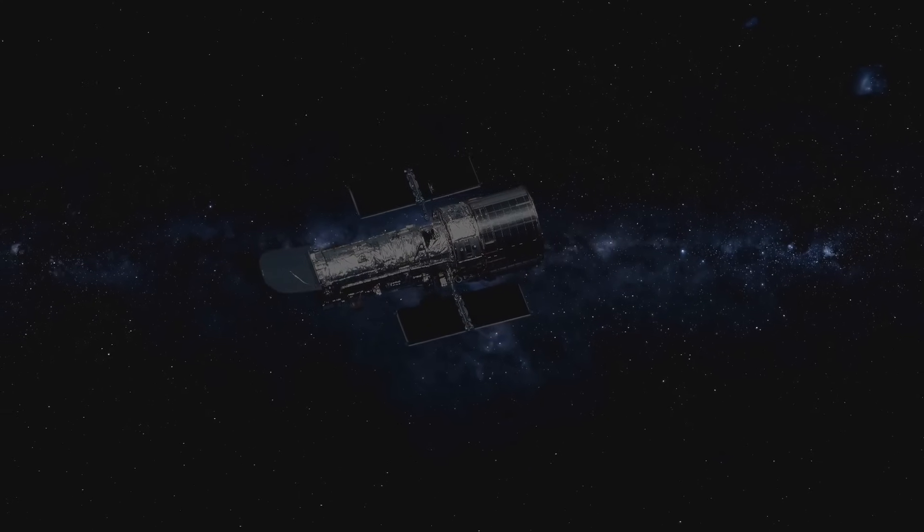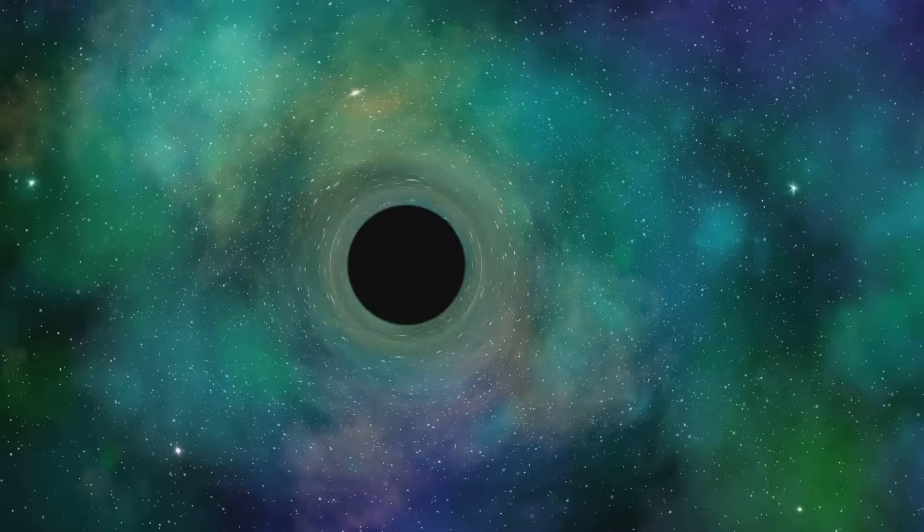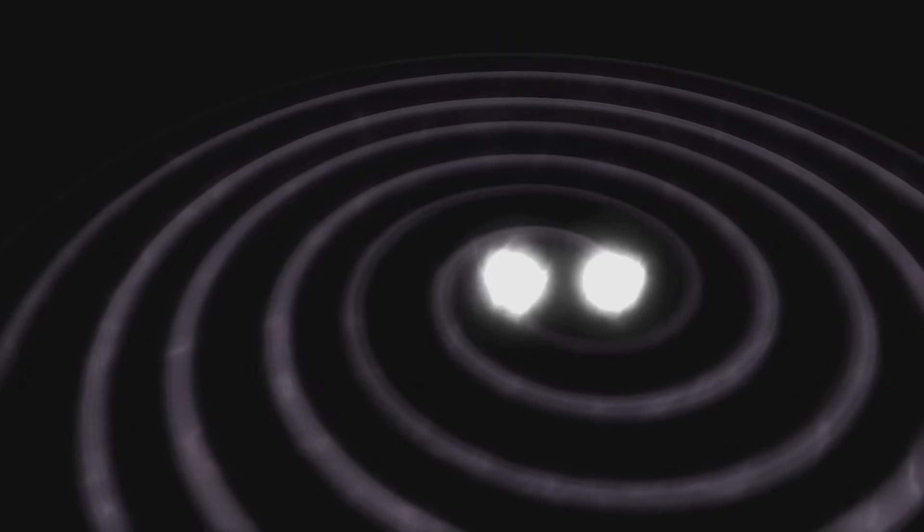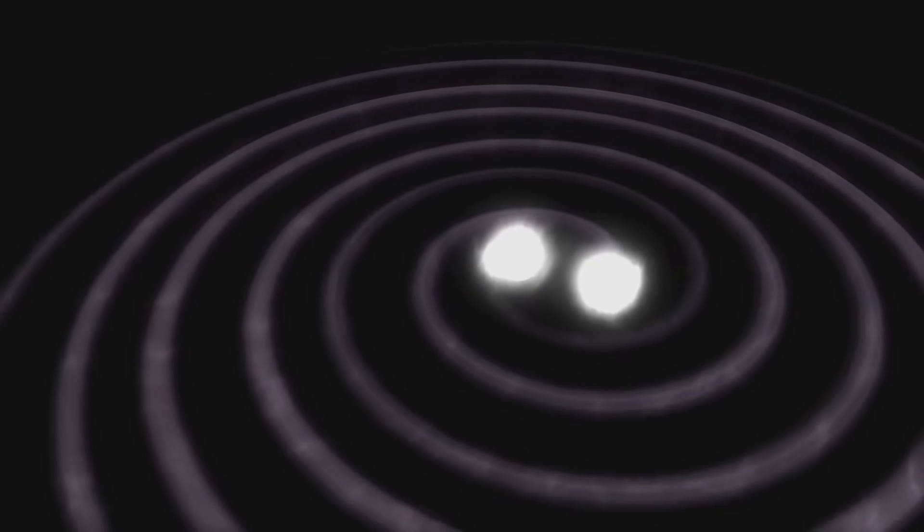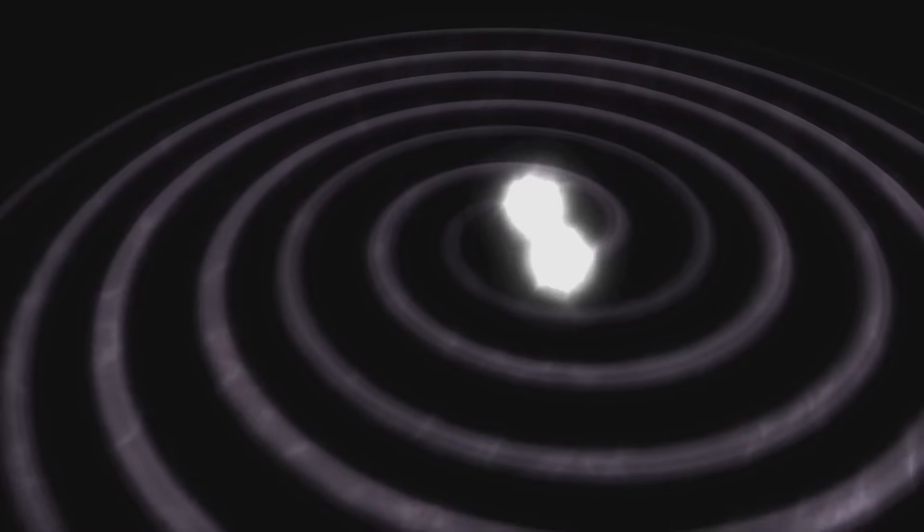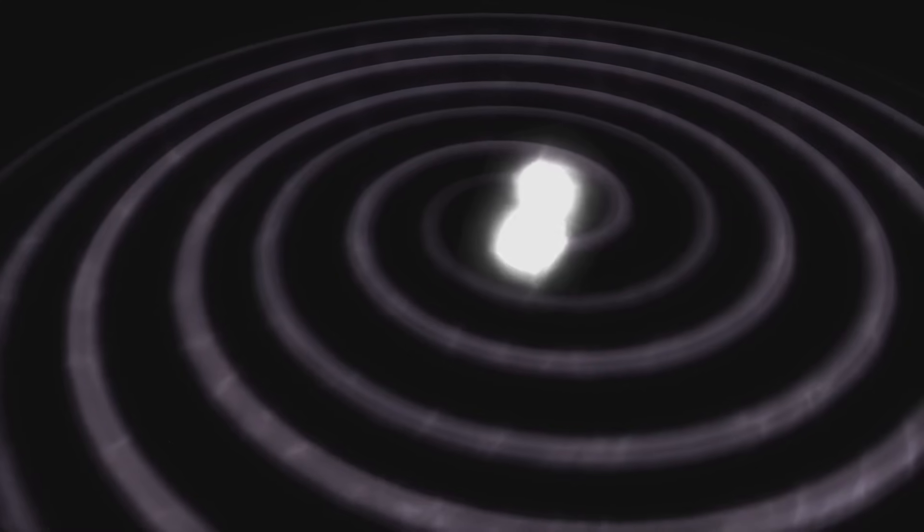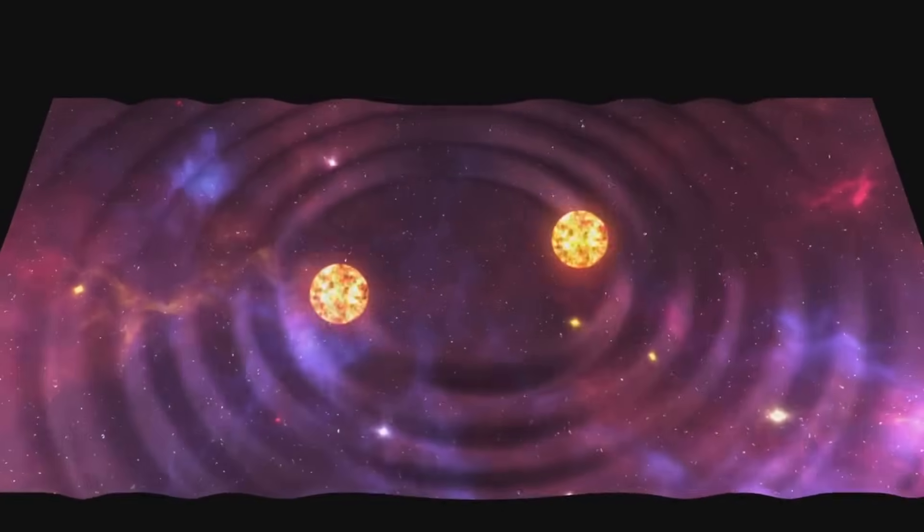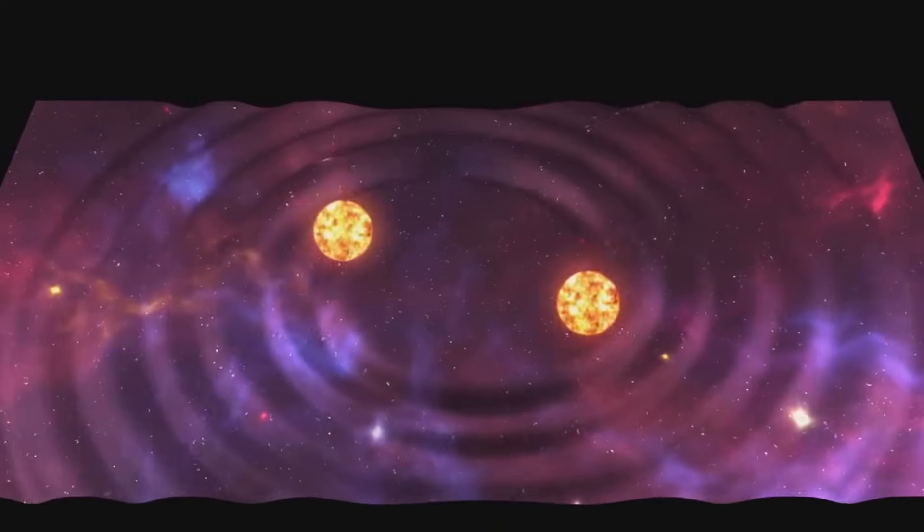Then there's the method of gravitational microlensing, where the gravity of a planet and its star bend and magnify the light from a more distant star behind them. This method has the advantage of being able to detect planets at greater distances from us, but it's a rare event and requires constant monitoring of the sky.